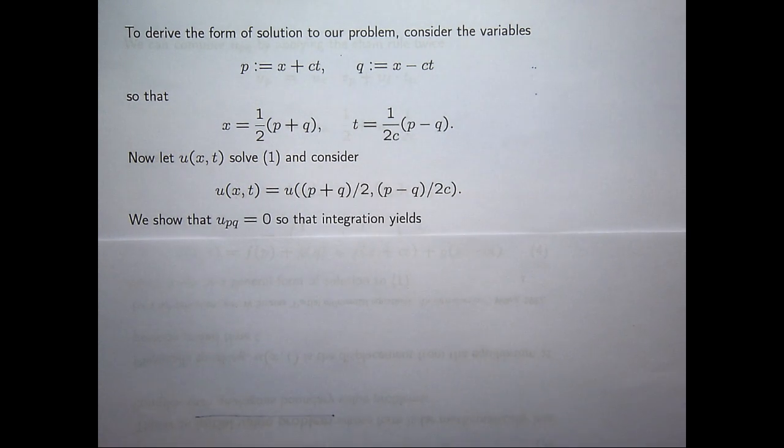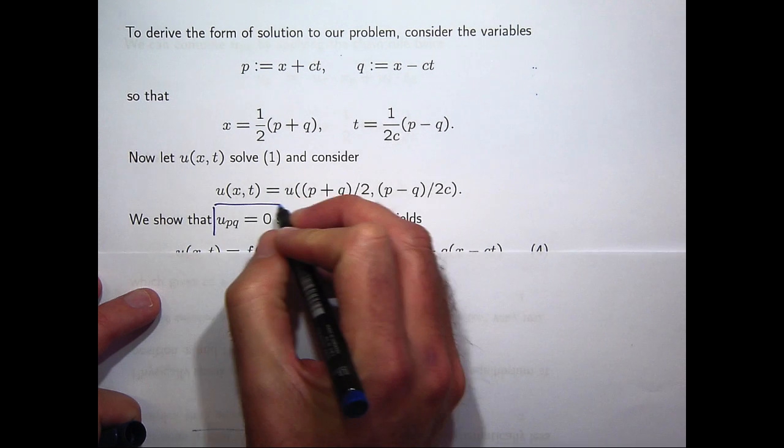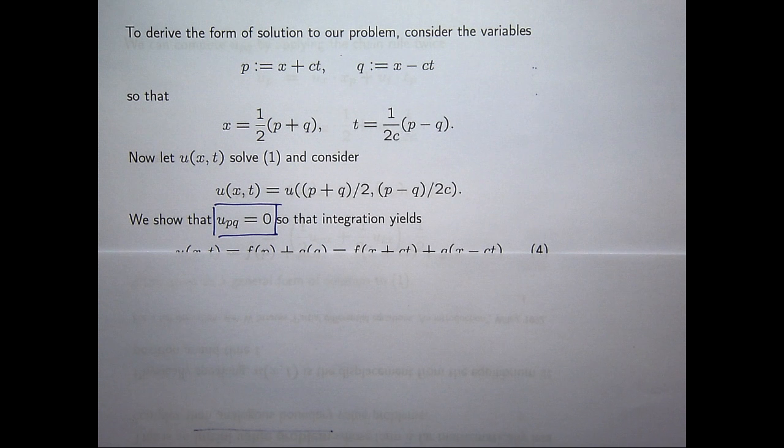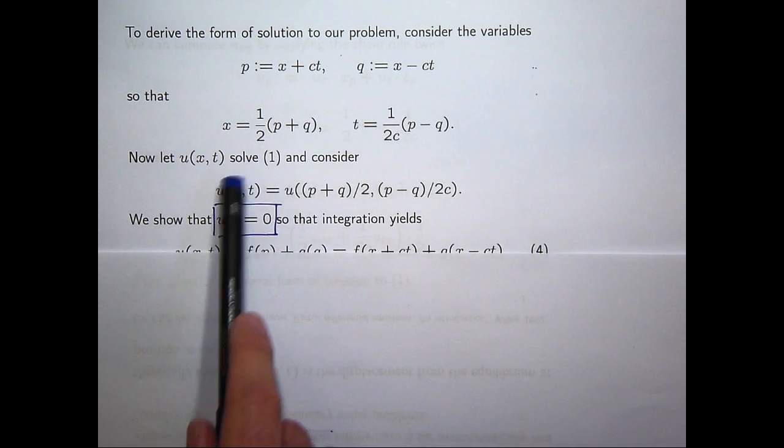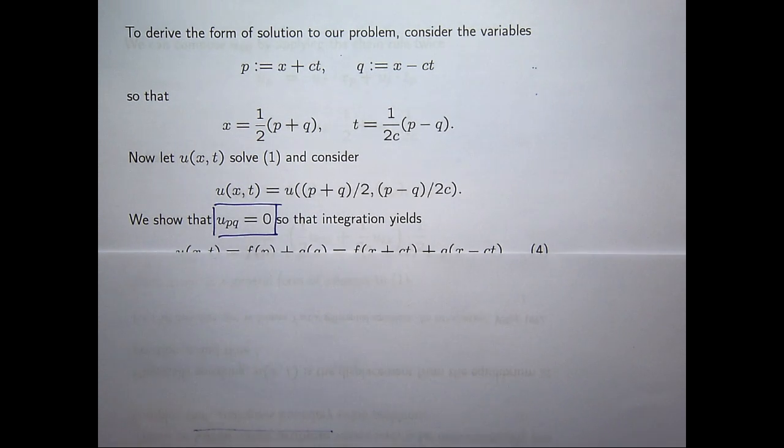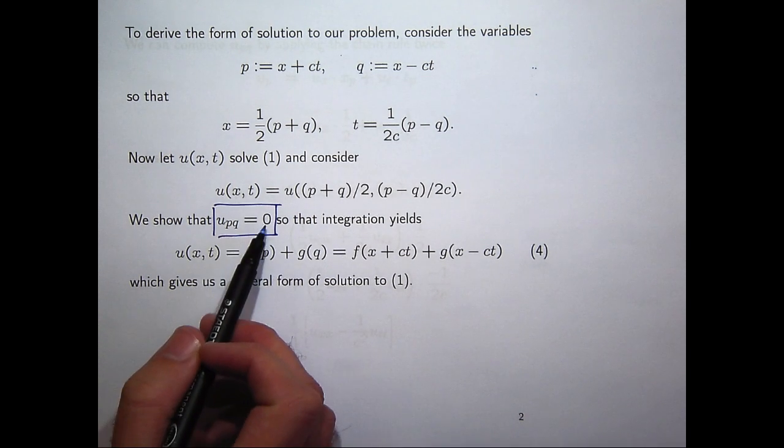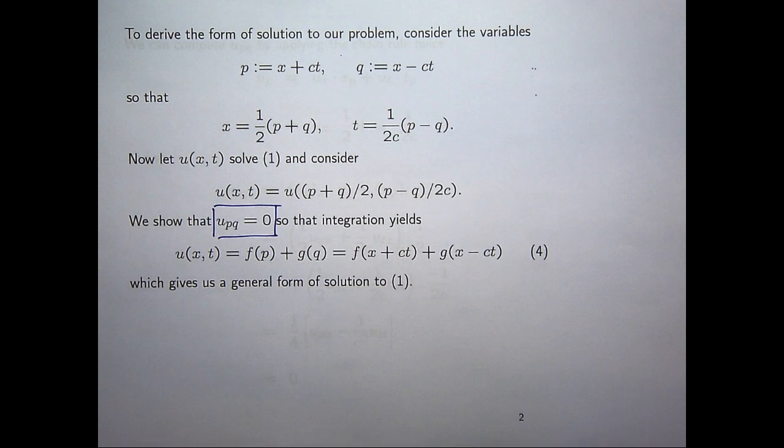So, suppose u is a function to my wave equation. Now, the key to this working is to show that that box PDE holds. If I can show that that box PDE holds, then I can just integrate it directly and solve. So, what I'm going to do is calculate u sub p from this form, and then u sub p q, and show that it equals zero. So, I claim here that if u sub p q equals zero, then integration yields this. Let me show you why that's true.